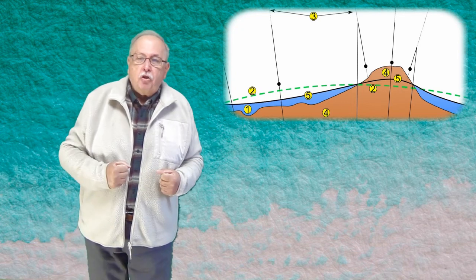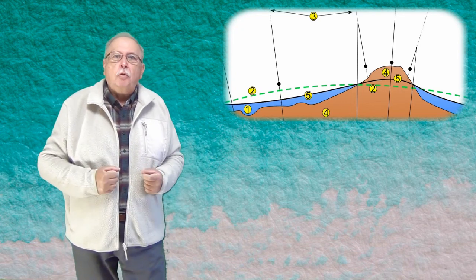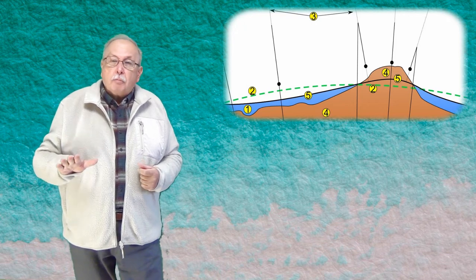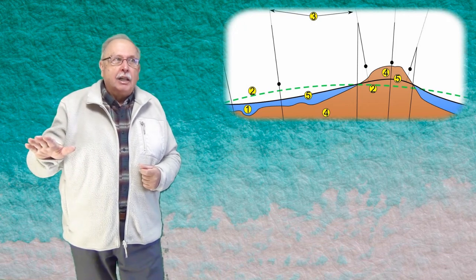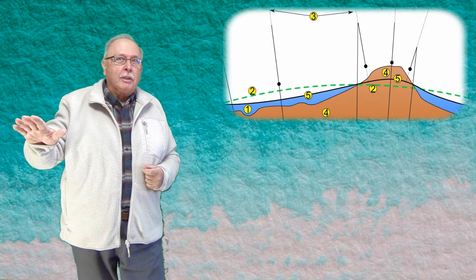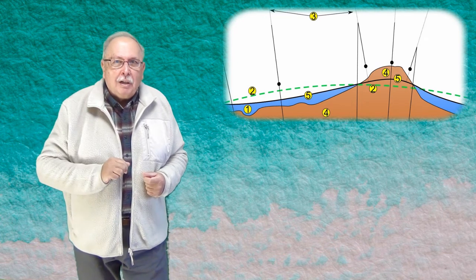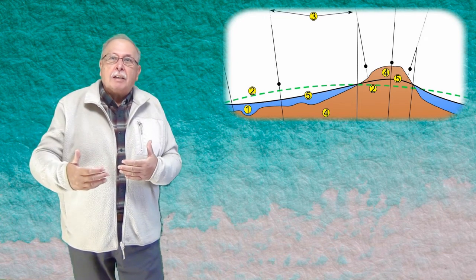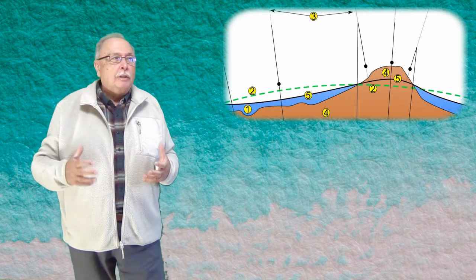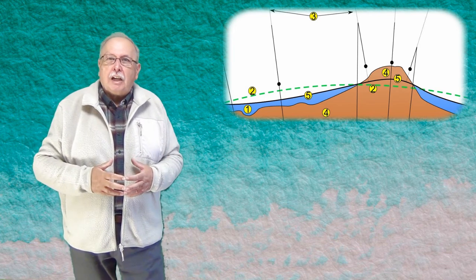Datorită acestui fapt, continentele atrag apa oceanelor spre ele, așa cum am mai spus, așa că atunci când ne apropiem cu vaporul de un continent, ne îndepărtăm de centrul Pământului, dar nu urcăm, deoarece ne deplasăm pe suprafața apei, care este normal în fiecare punct la liniile câmpului gravitațional.